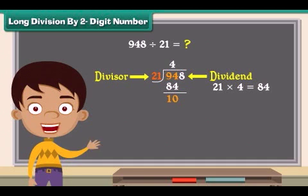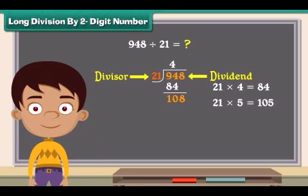Go to the next number in the dividend. The next number is 8. Now drag the number down. The number becomes 108. Now divide the new number 108 by 21. 21 fives is equal to 105. Place 5 above and the answer under 108.